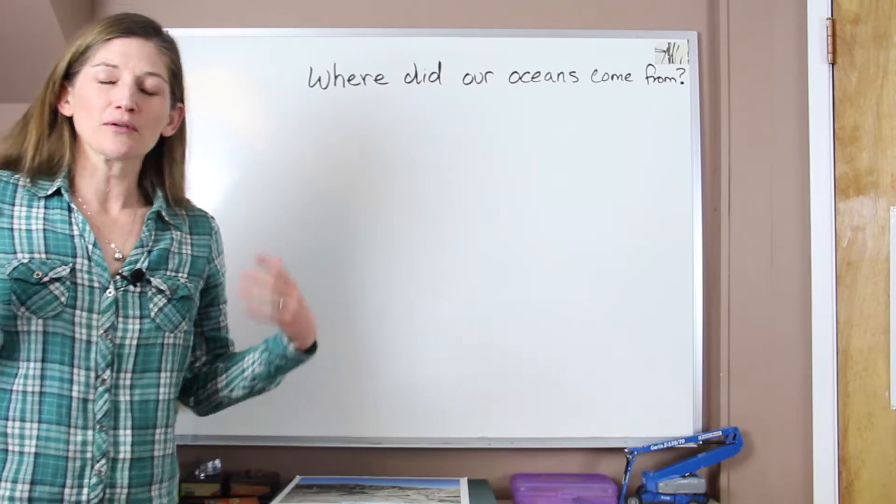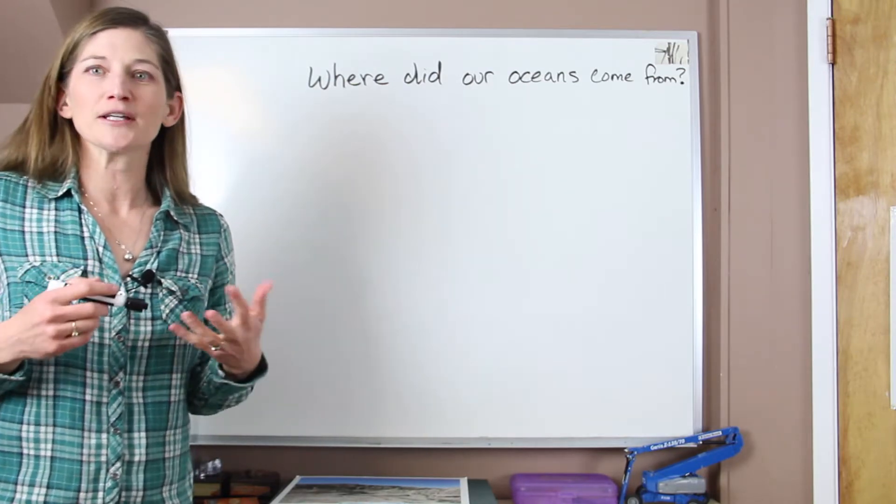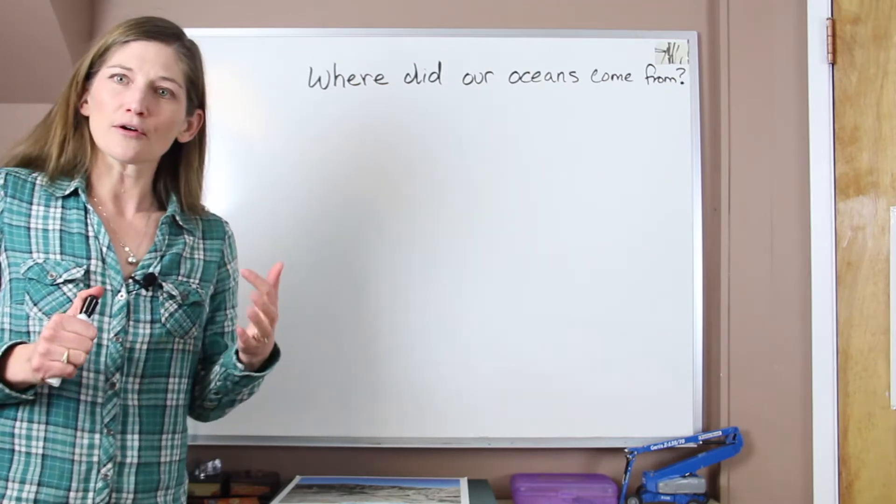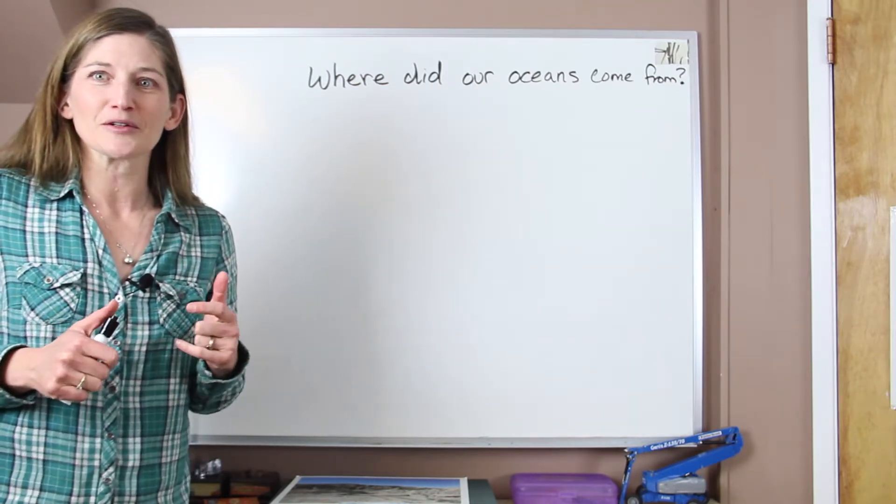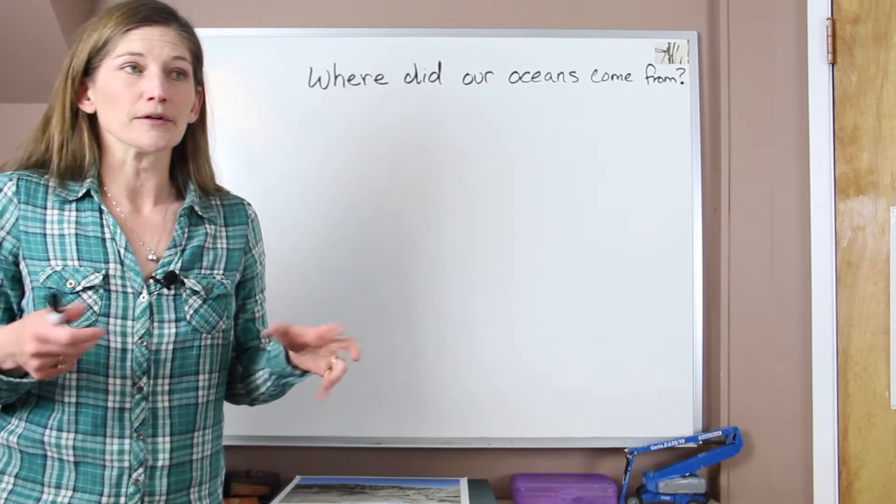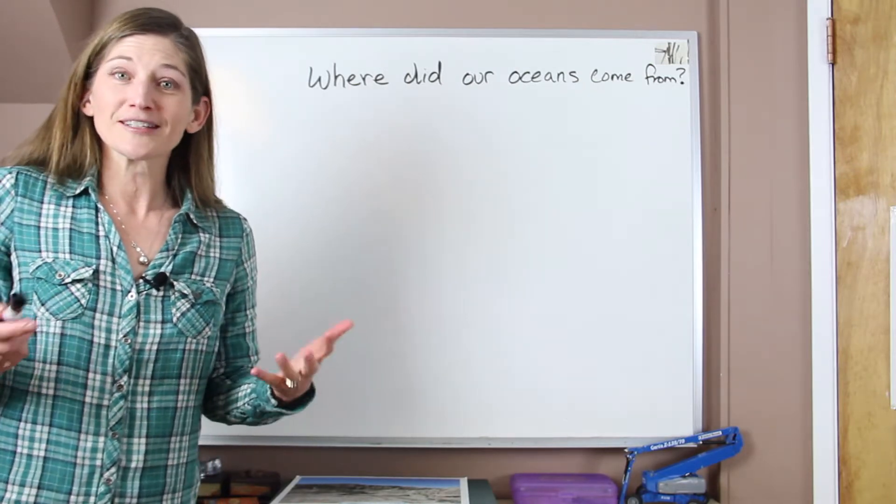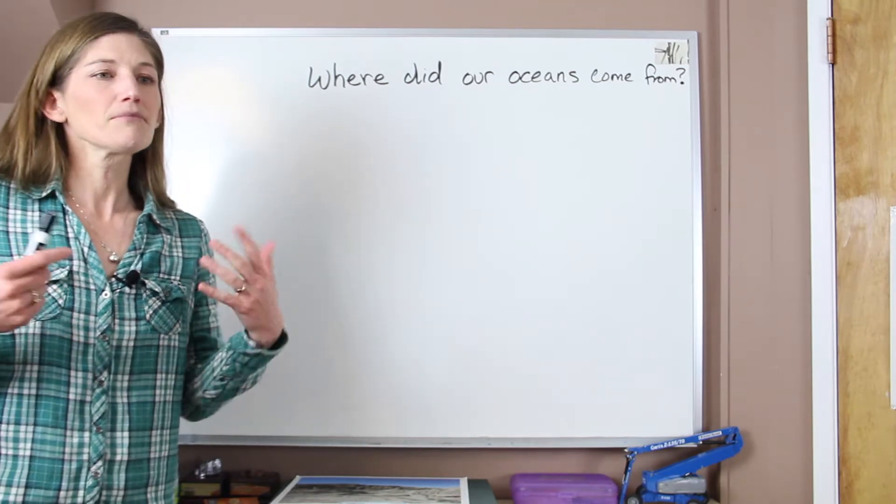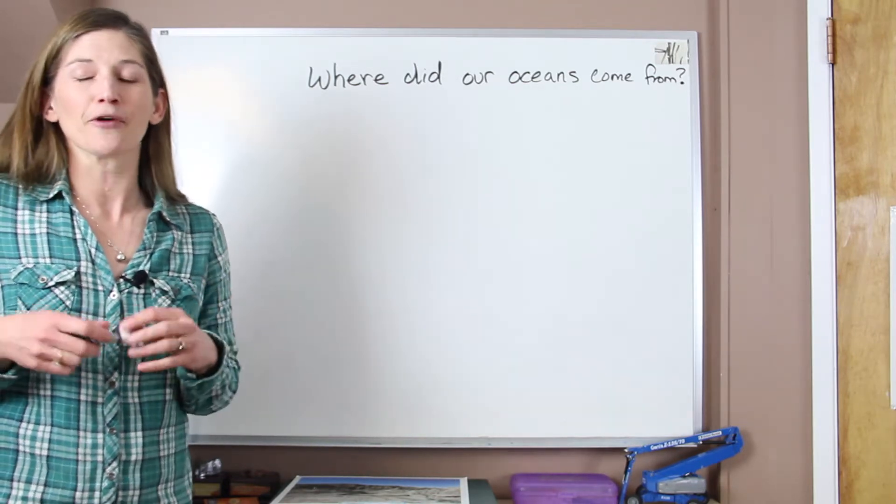Now if you recall, our oceans are about four billion years old. They've been around for a really long time, but our Earth being at 4.6 billion years old is just a little bit older. So the question is, where did all of the seawater that we find in our oceans come from, and do we actually know exactly where it came from?